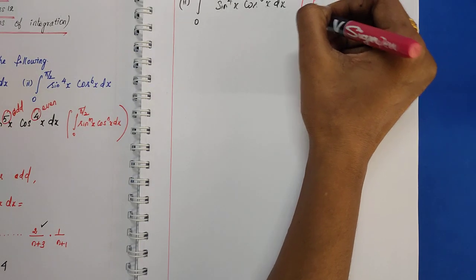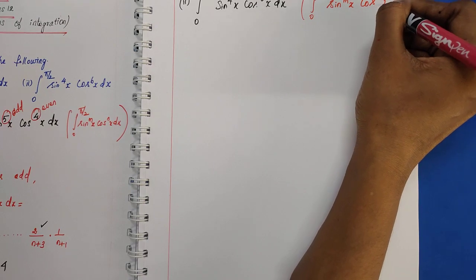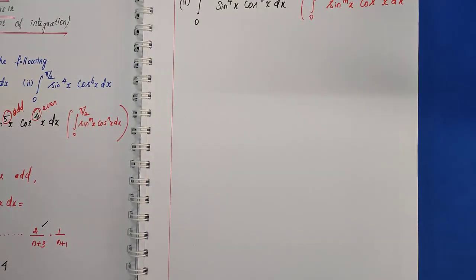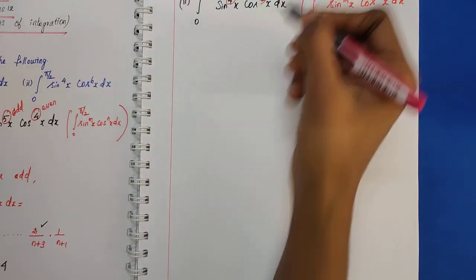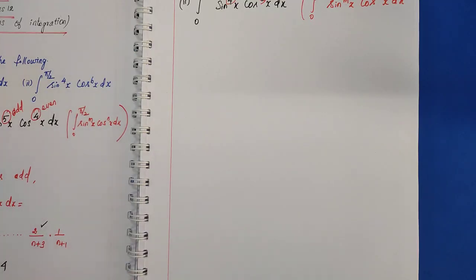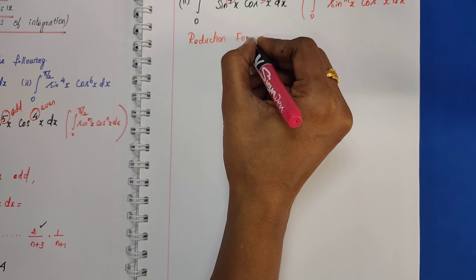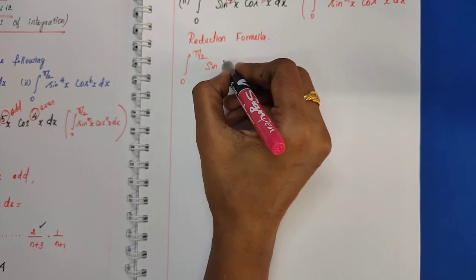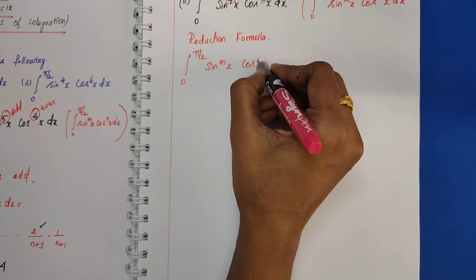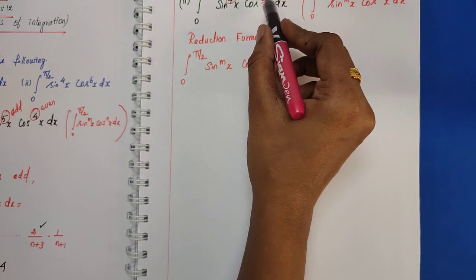This question is of the form integral from 0 to π/2 of sinᵐx·cosⁿx dx. Here both m and n are even — m=4 is even and n=6 is even. For this type of question we use the reduction formula, which is integral from 0 to π/2 of sinᵐx·cosⁿx dx.